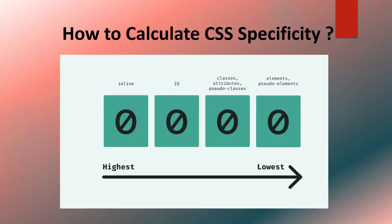In this diagram, you can understand that specificity starts from inline — inline has the highest specificity. Next comes ID, then classes, attributes and pseudo classes, and finally elements and pseudo elements. If you observe, there are four digits: 0000. Initially all zeros, and by examining an element and its styles, the browser calculates and fills in these numbers. If there is a conflict between two stylesheets, the element with the highest number gets its style applied.